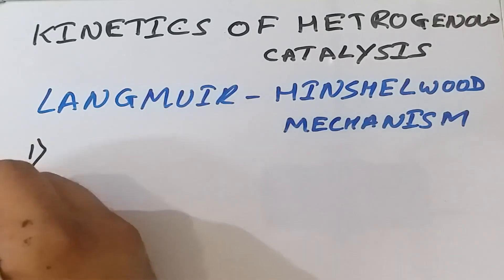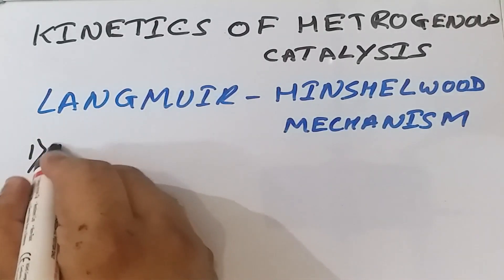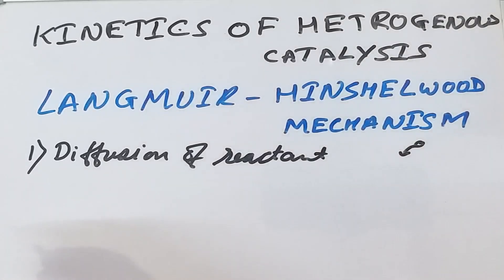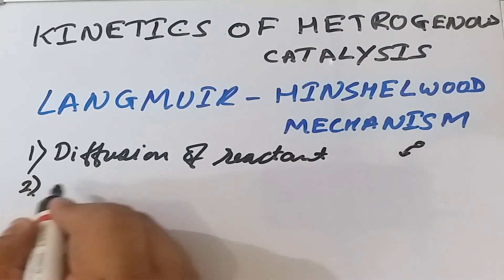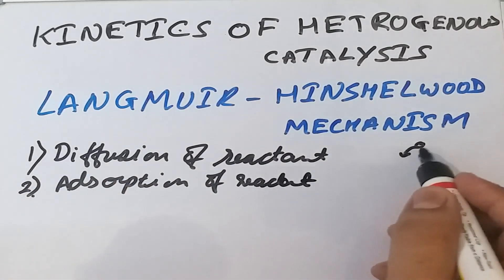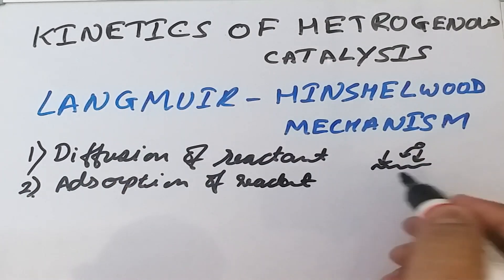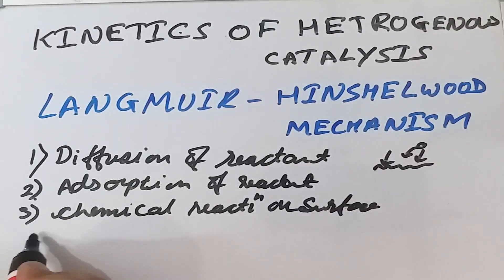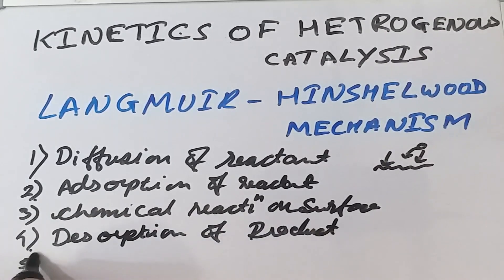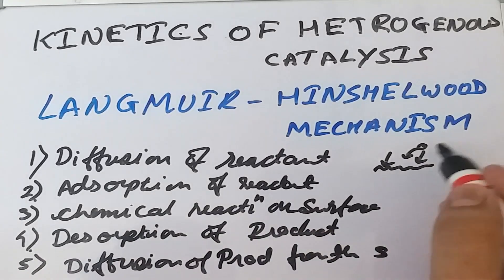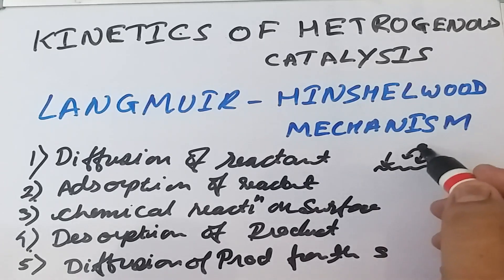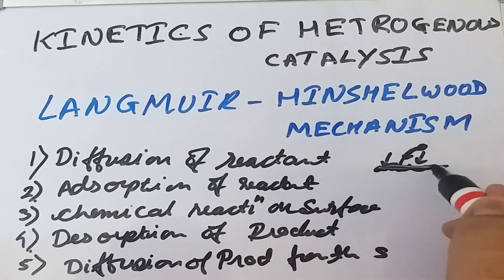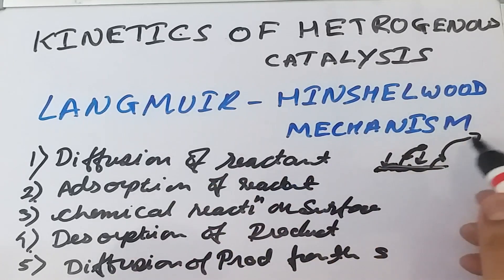Every heterogeneous catalytic reaction follows a few elementary steps. The first step is the diffusion of the reactant gas molecule toward the solid catalyst. The second step is the adsorption of the reactant onto the catalyst surface. The third step is the chemical reaction taking place on the surface. The fourth step is the desorption of the product, and the fifth step is the diffusion of the product away from the surface.